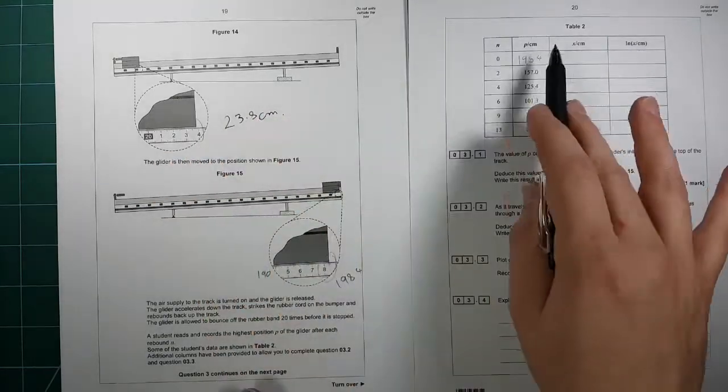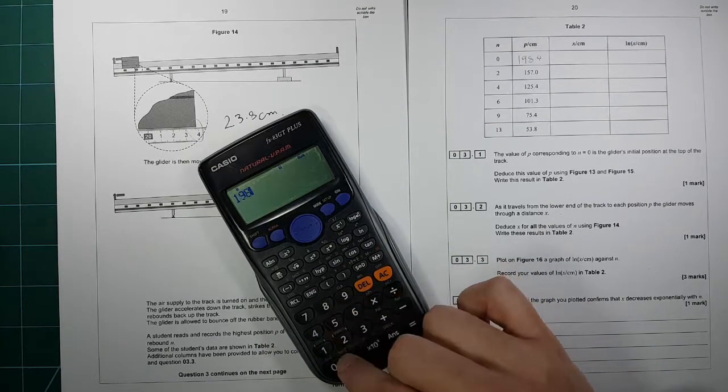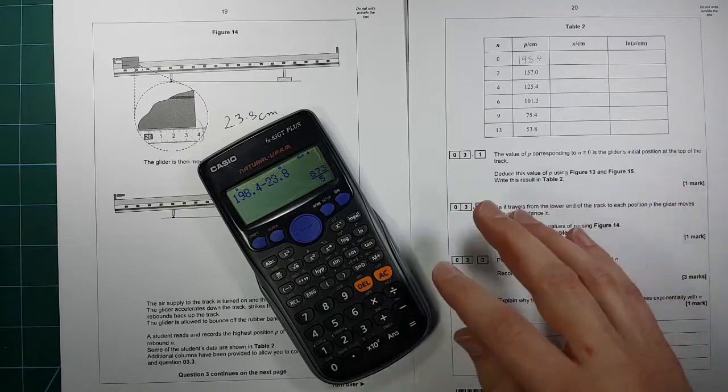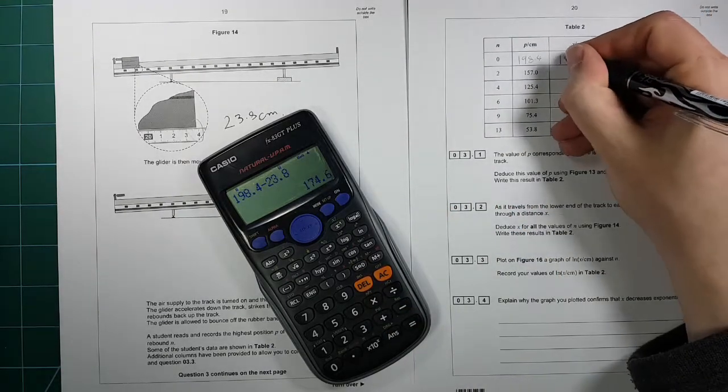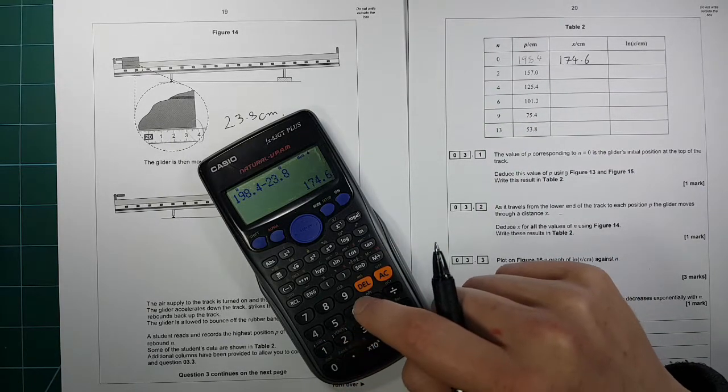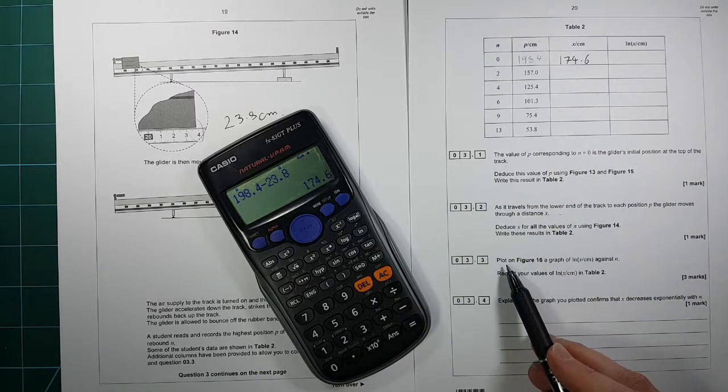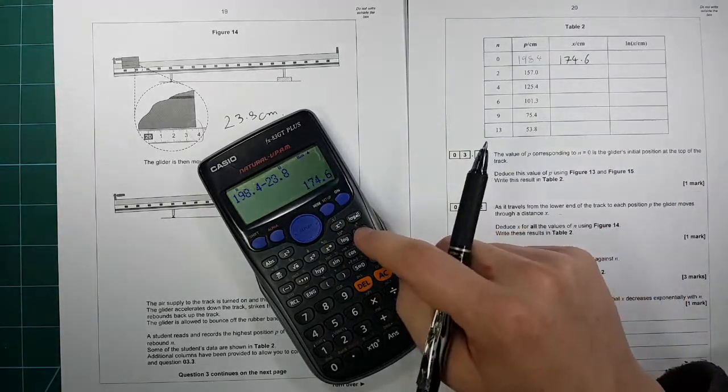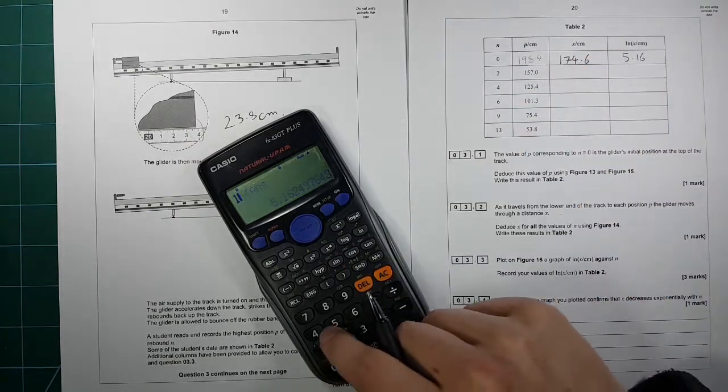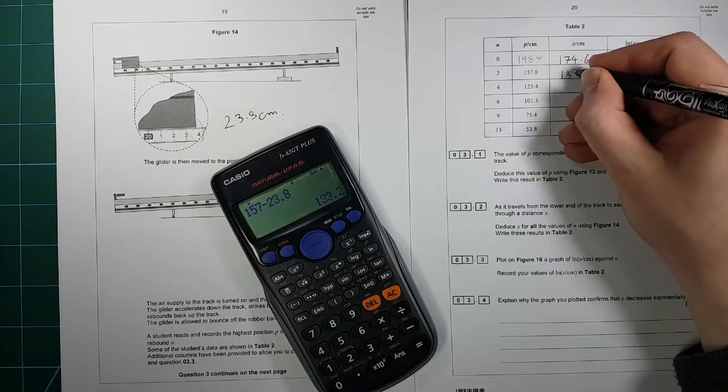So we need to take that off every single one of these readings. So we do 198.4, take away 23.8, gives us 174.6. And then we keep doing that for every single one. But before I do that, I'm just going to have a look at this question here. We're going to need to work out ln of X. So while it's on my calculator, I might as well work out its logarithm at the same time.